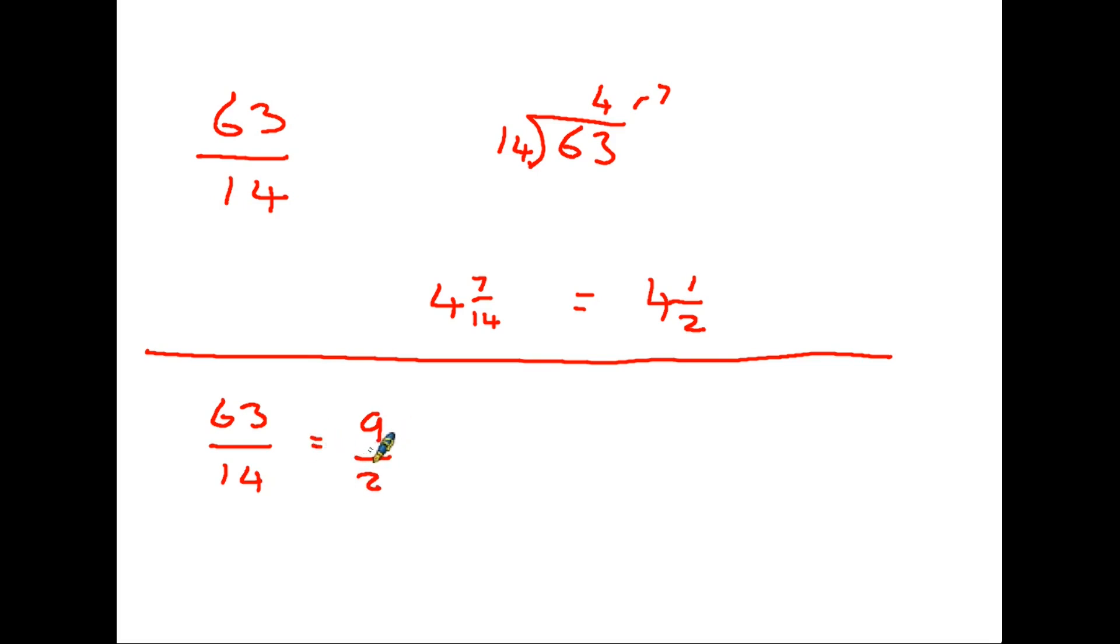Again, don't get too worried about simplifying if you're not sure how that works. Go and have a look at the other video on simplifying fractions and come back to this. But now we have nine over two. It is an equivalent fraction. Therefore, all we have to do is divide nine by two.